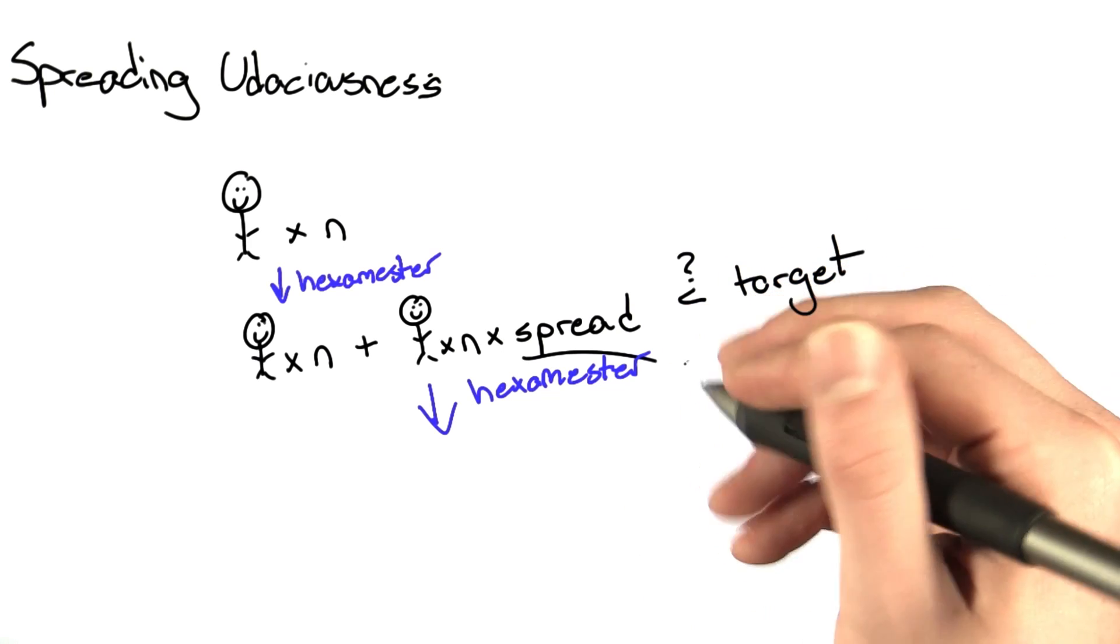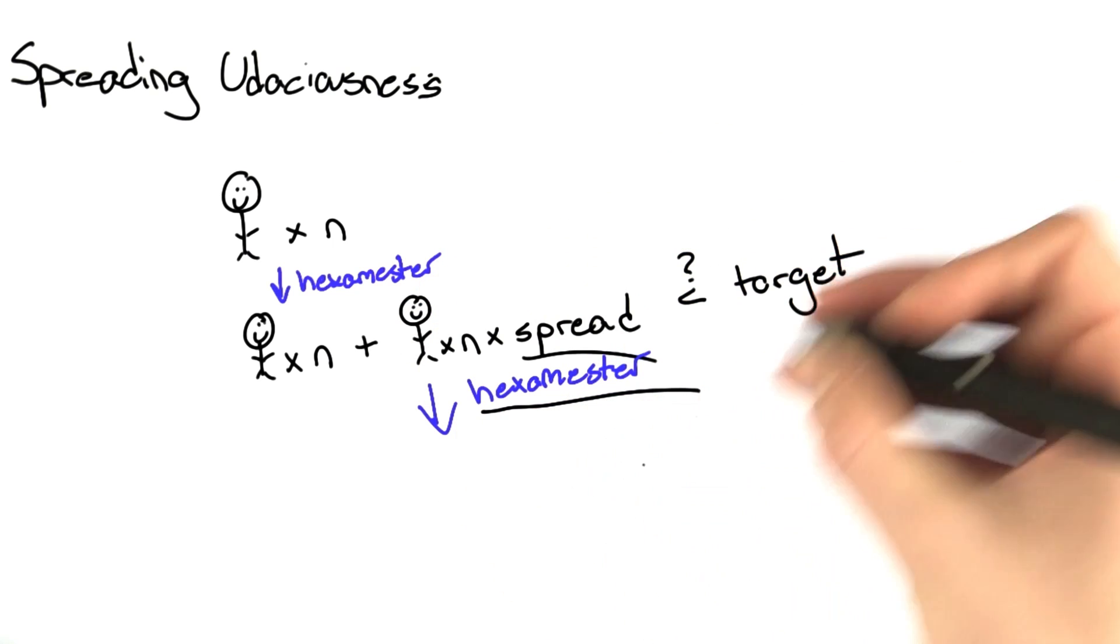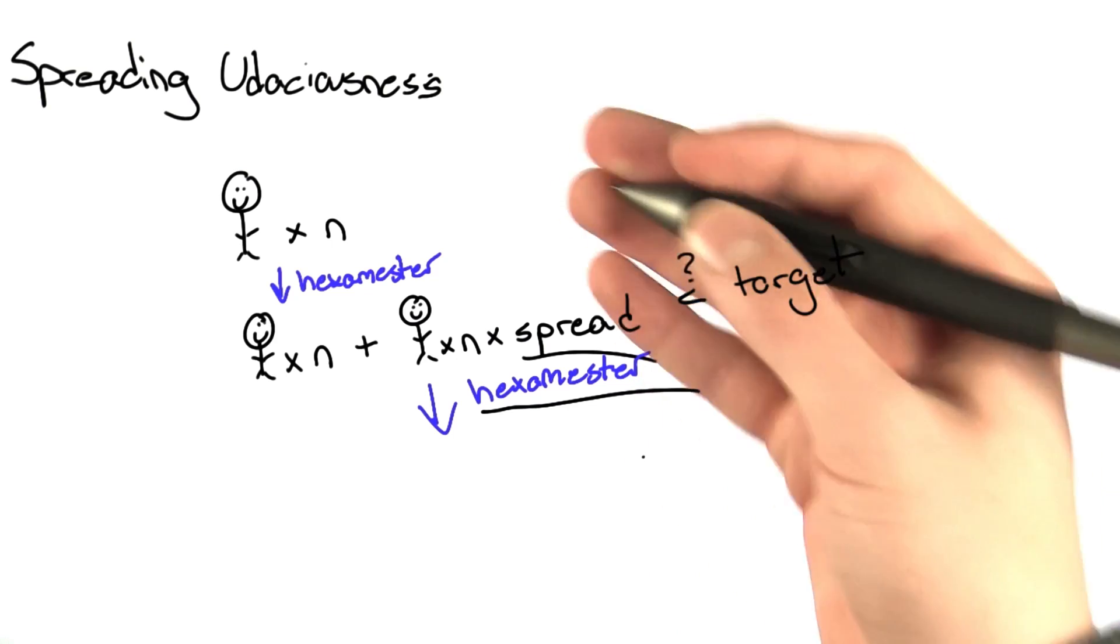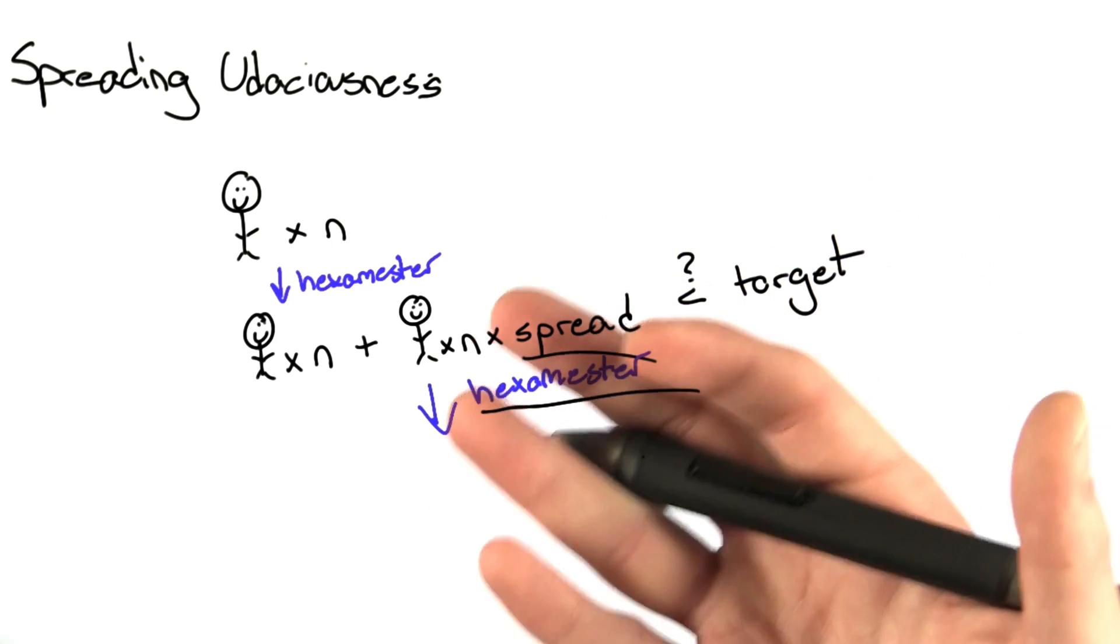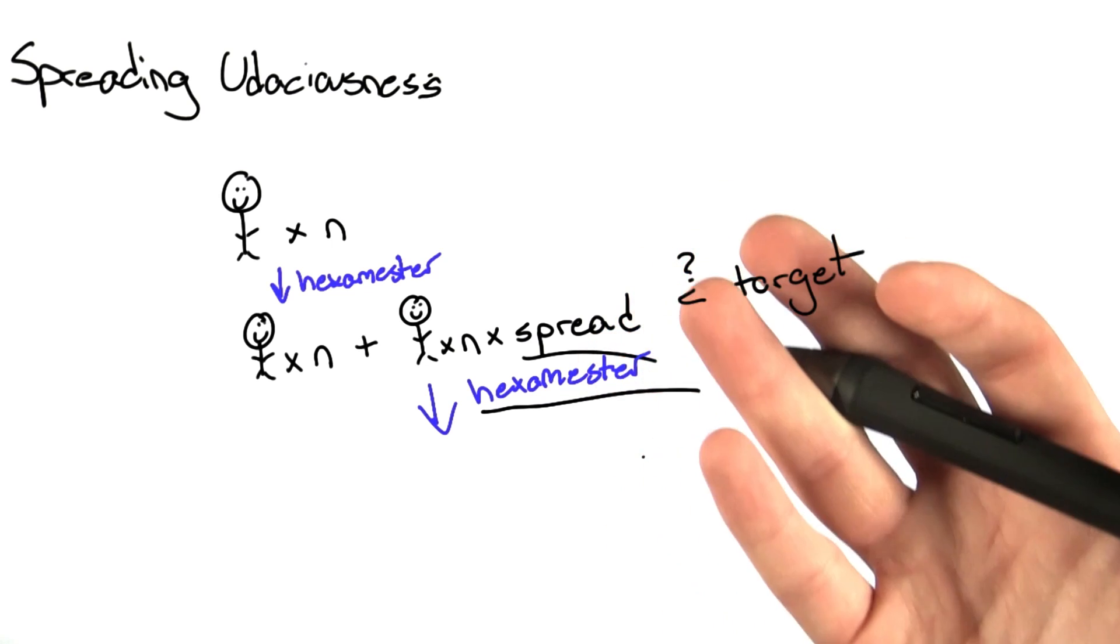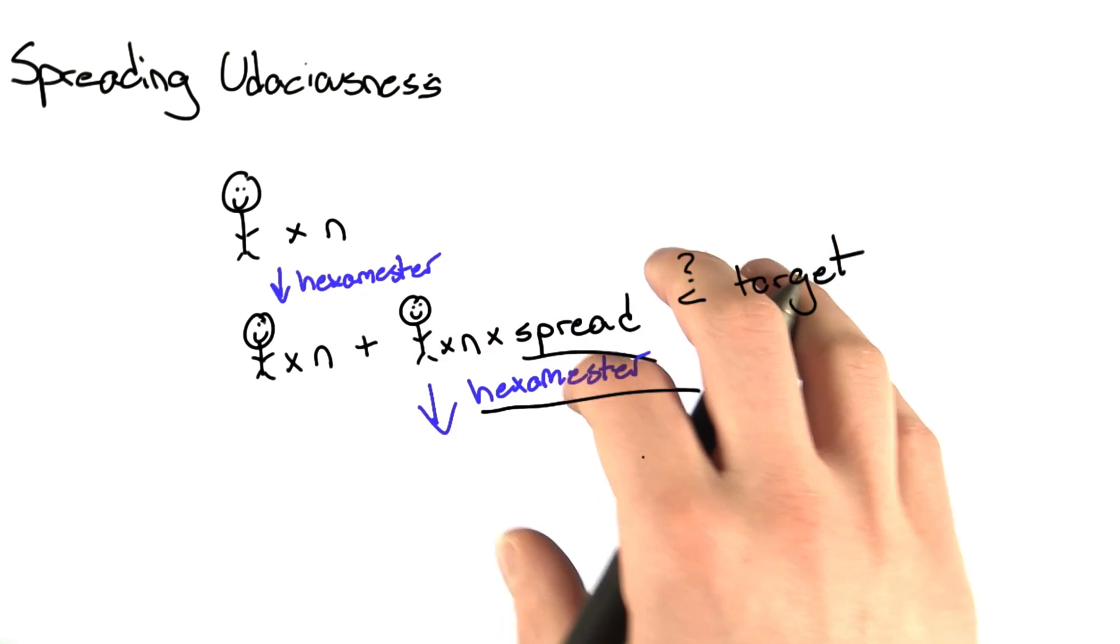Remember, what we're looking for is the number of hexamesters this process goes through until we reach the target. I saw in the forums a couple of people were trying to use global variables that counted recursive calls, but really that defeats the purpose and the power that we can use in recursion. I'm going to show you how to do that right now.